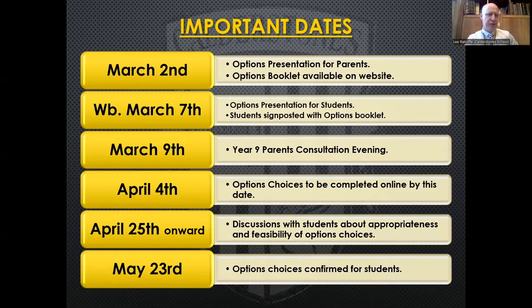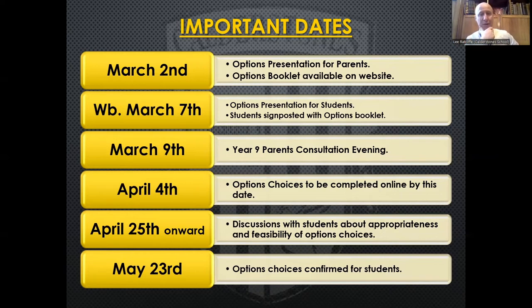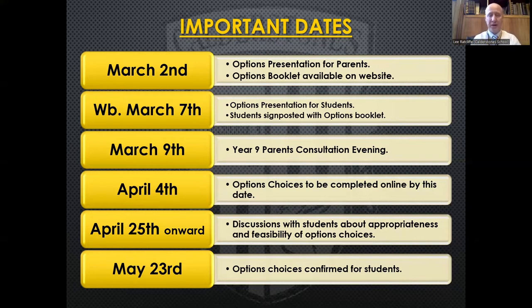By around May 23rd — the start of May half term — we should have confirmed everything and started to build the timetable. The timetable for this school begins with Year 9, because that's the unknown: we don't know what the 9s are going to do as they move into Year 10, and it really changes everything. If lots of students choose computing or sociology, for instance, we may need to make staffing decisions. Meeting that April 4th deadline gives us enough time to plan ahead.